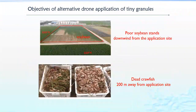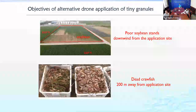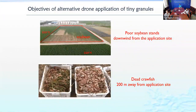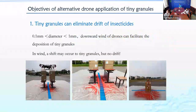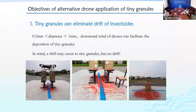Here are two examples of droplet drift damage. The top picture shows dead soybeans caused by droplet drift, and the lower picture shows dead crayfish that occurred 200 meters away from the application site.